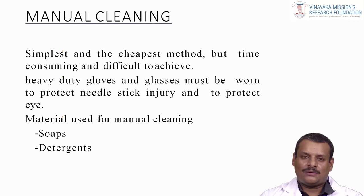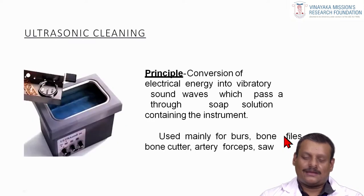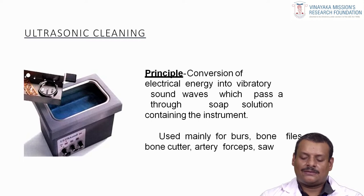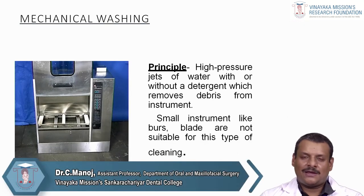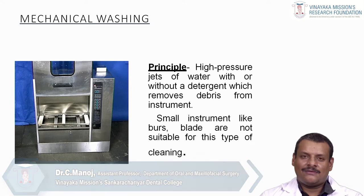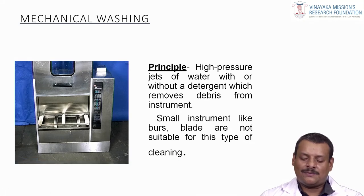Heavy duty gloves and glasses must be worn to protect against needlestick injury and to protect the eye area. Material used for manual cleaning is soaps and detergents. For ultrasonic cleaning, the principle used is conversion of electrical energy into vibratory sound waves passing through a soap solution containing the instruments. It is used mainly for burrs, bone files, bone cutters, artery forceps and saws. Mechanical washing uses high-pressure jets of water with or without detergent to remove debris; small instruments like burrs and blades are not suitable for this type of cleaning.